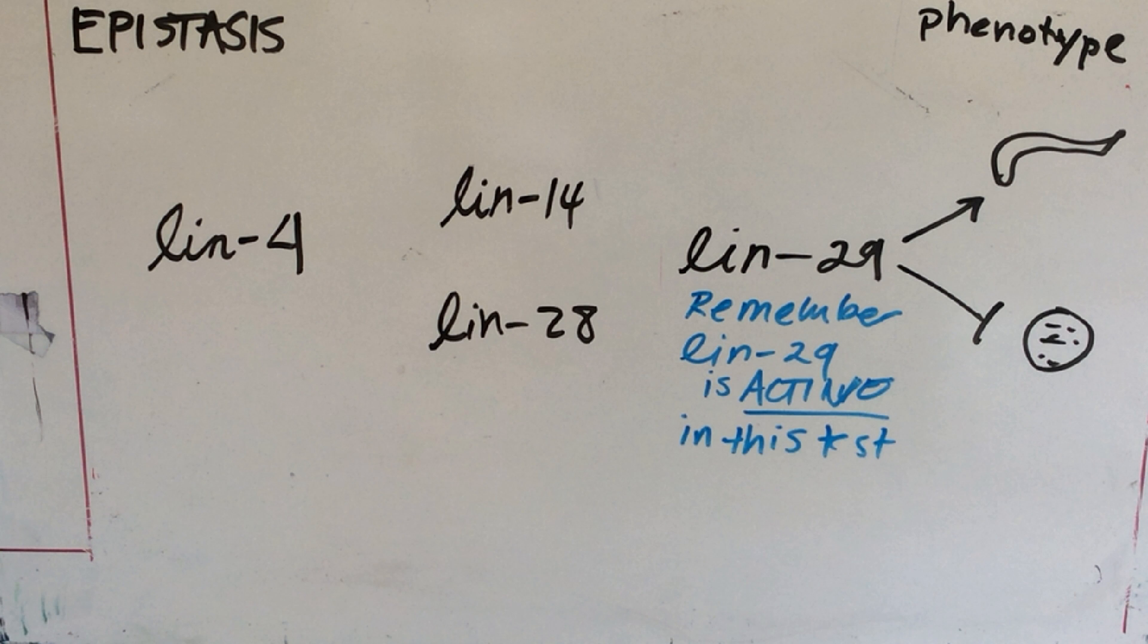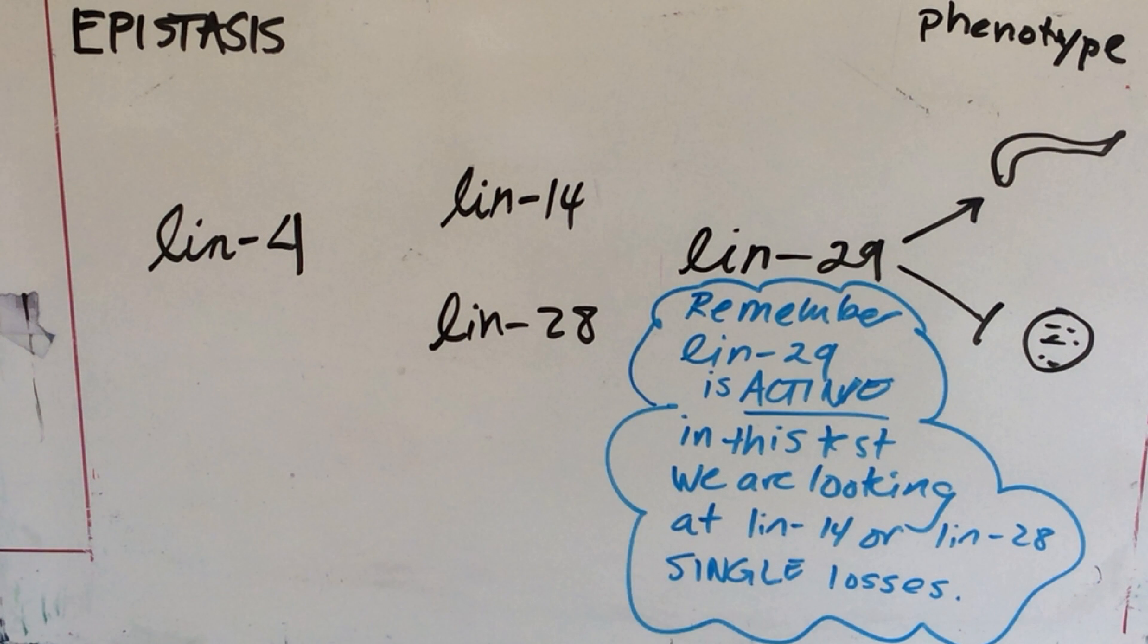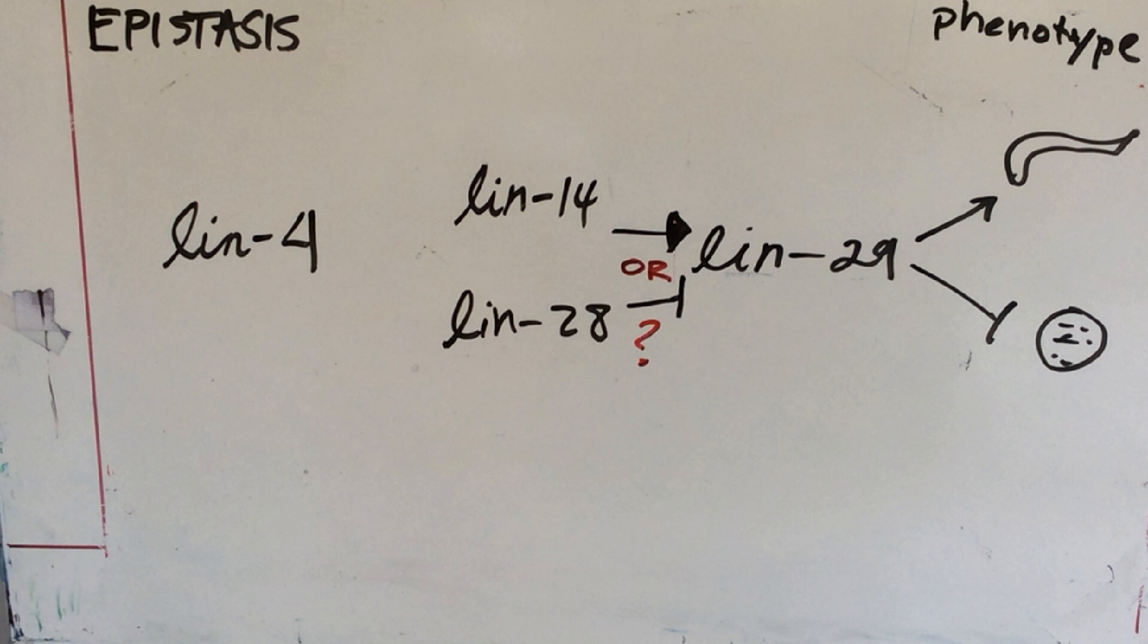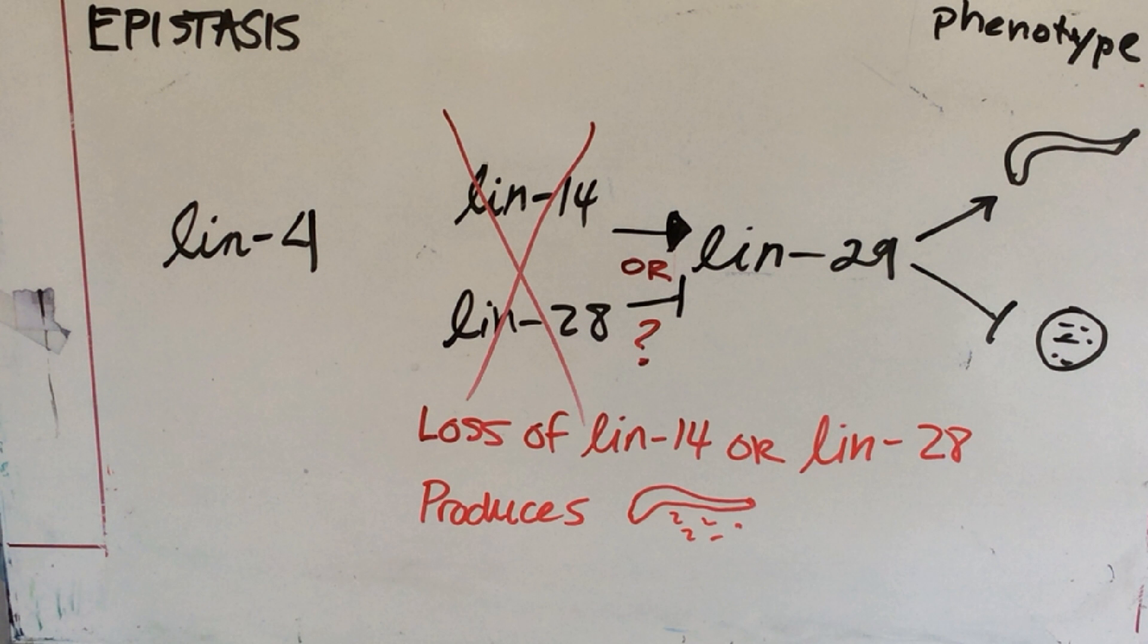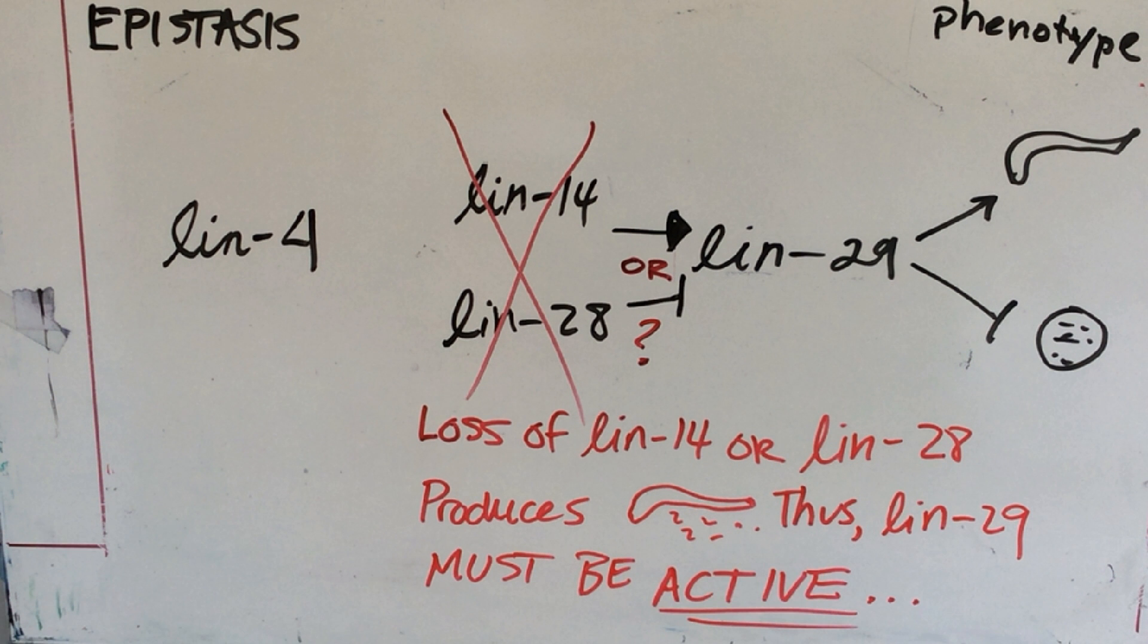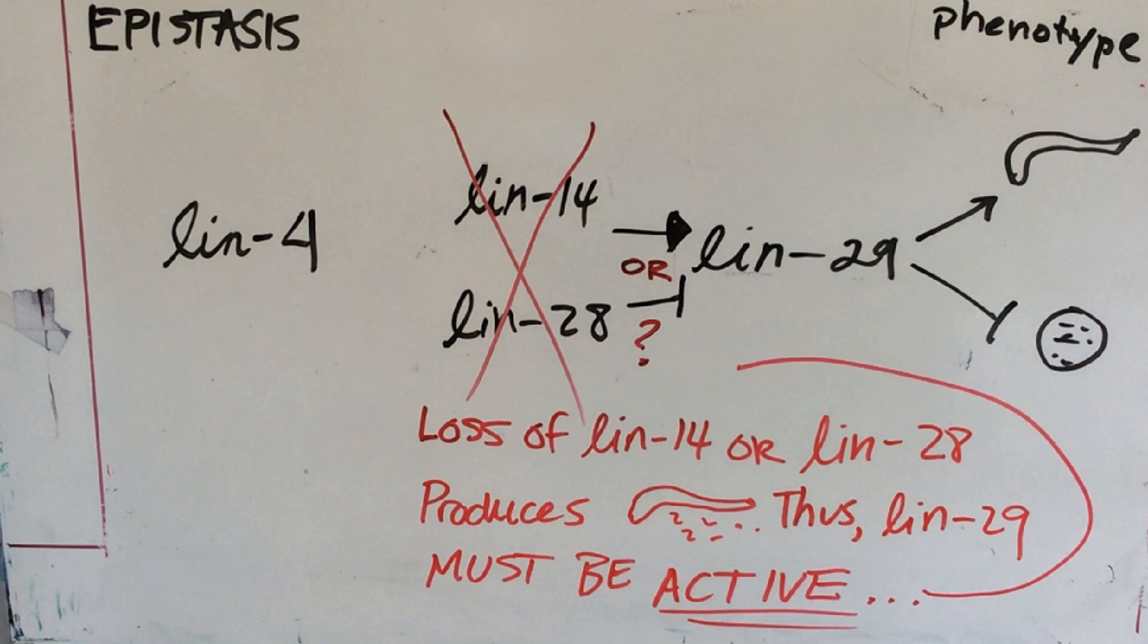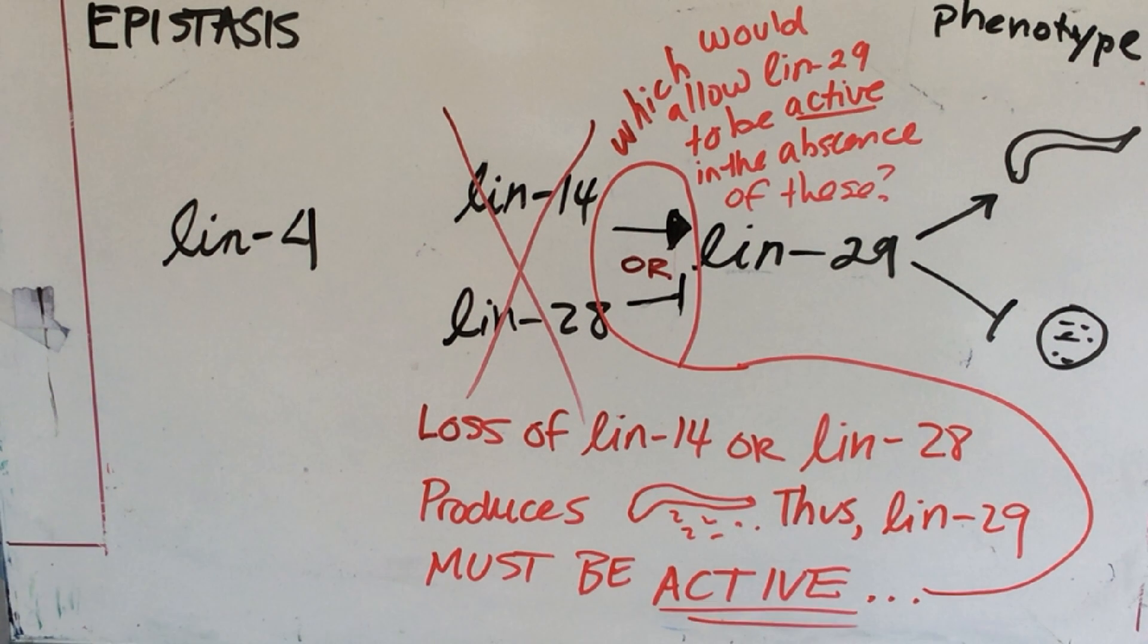In this test, we are looking at LIN-14 or LIN-28 loss. So, does LIN-14 or 28 activate or inactivate 29? Their loss produces wild type progeny, remember. Thus, LIN-29 must be active when these two are missing. And the only way for this to happen is if a repression is relieved.